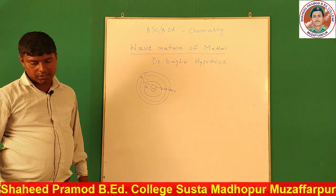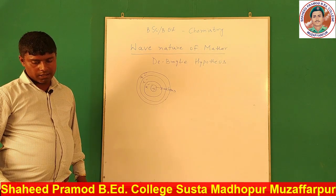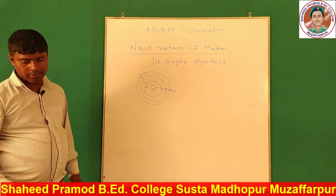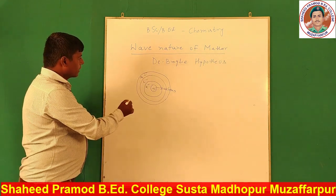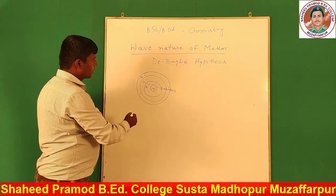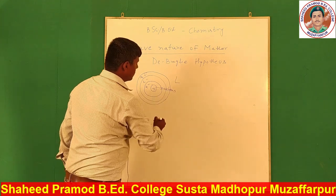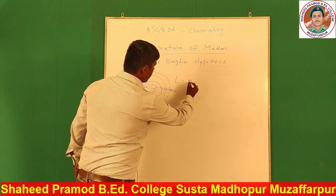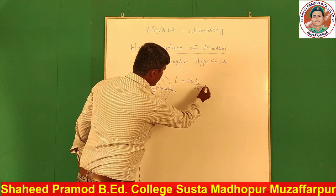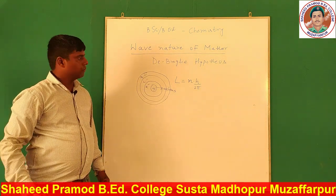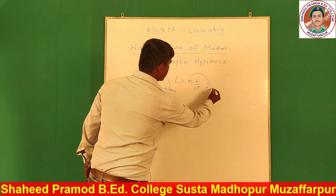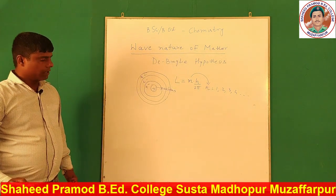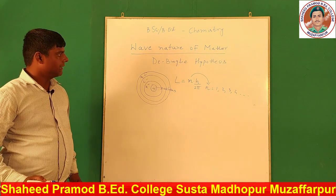The third postulate gives the condition for electron revolution: the electron revolves only in those circular orbits where the angular momentum is an integral multiple of h upon 2π. The angular momentum, denoted by L, must equal n times h upon 2π, where n is an integer — 1, 2, 3, 4, and so on. Only when this condition is satisfied will the electron revolve in that particular shell.